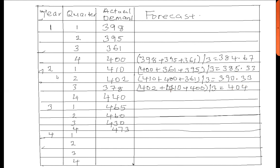For quarter 4 of year 2, that will be the last 3 data: 378, 402, and 410. So we say 378 plus 402 plus 410, divided by 3, which gives 396.67.